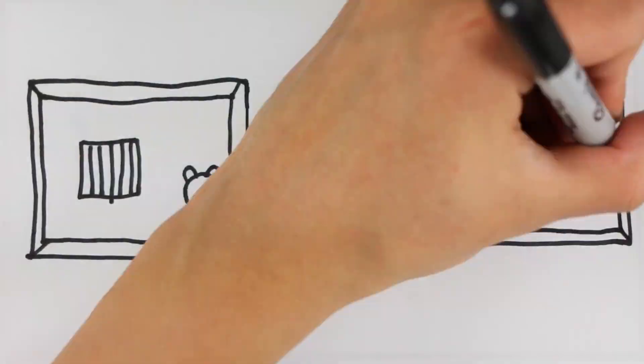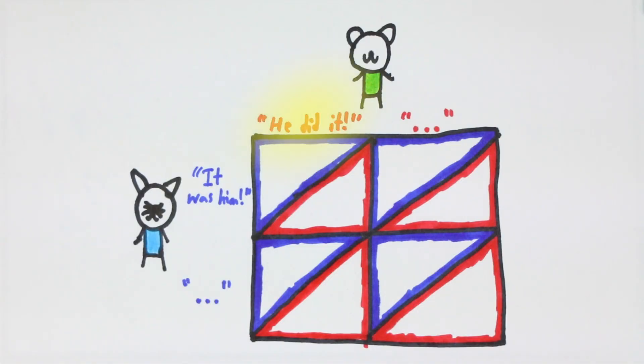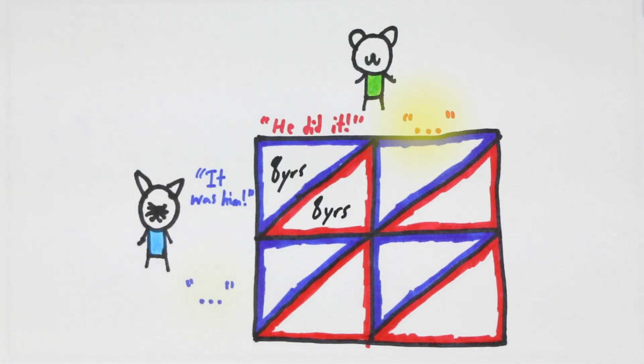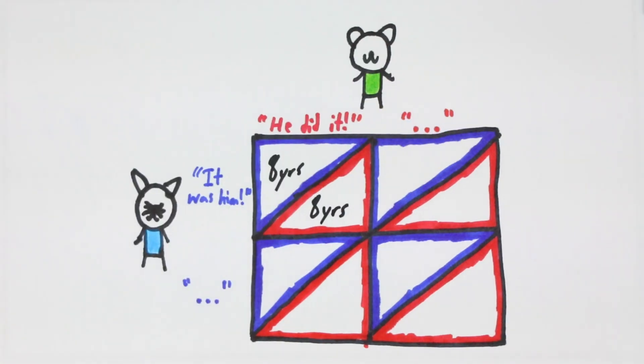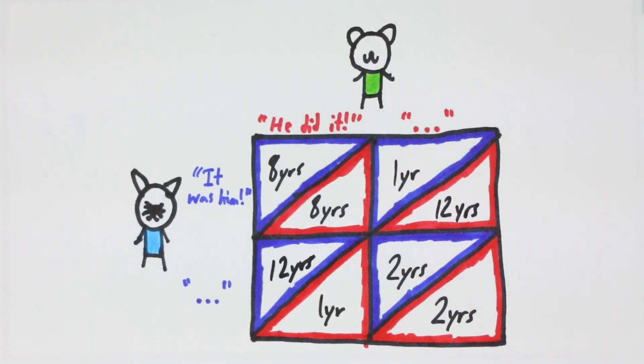Two people, Wolf and Whiskers, are arrested and are each faced with two options: to rat or not to rat. Briefly, if Wolf chooses to rat and so does Whiskers, both will serve fairly long terms, whereas if both Wolf and Whiskers choose to not rat, they'll both get off with shorter sentences. However, if one rats and the other doesn't, then the turncoat gets off with the shortest sentence and the poor accomplice serves the longest possible one.